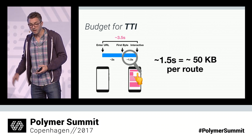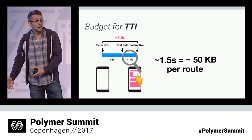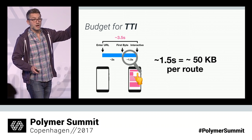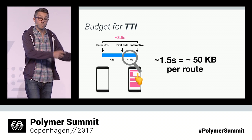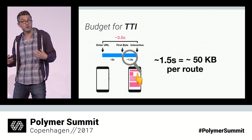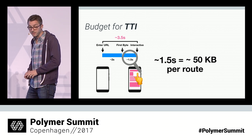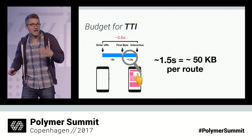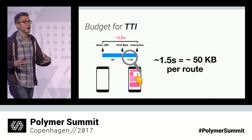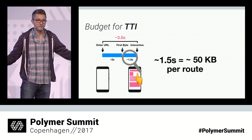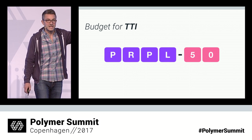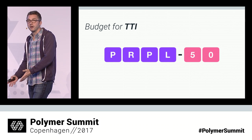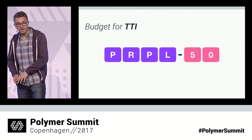That 1.5-second budget translates to about 50 kilobytes of code. That doesn't sound like a ton, but with new Polymer 2.0 starting at around 12K, that leaves about 40K left for your budget. We're doing a lot of work to make our element sets highly optimized to help you fit into this budget. We're calling this recommendation PRPL-50: apply the PRPL pattern and budget yourself to 50 kilobytes — a good rule of thumb to ensure you're hitting good performance.